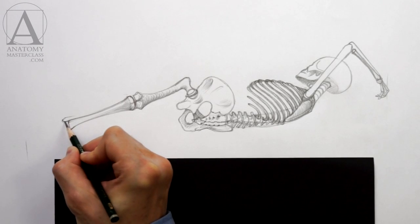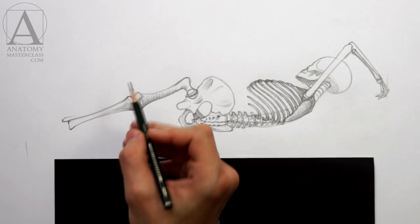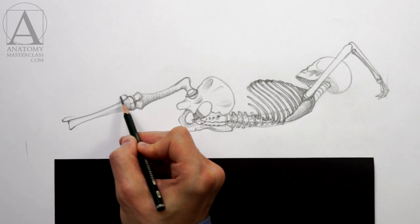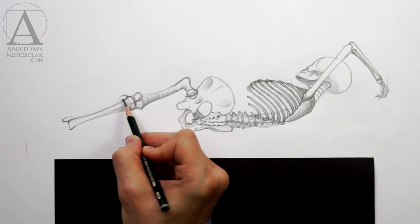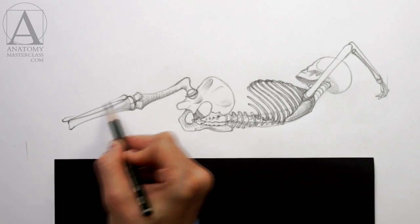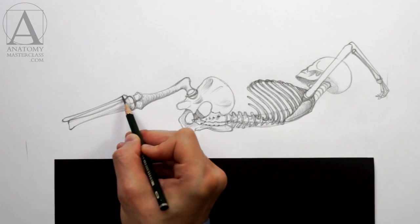Another bone of the lower leg is called the calf bone. At its bottom edge, it is positioned lower than the shin bone. This is why the outer ankle bone is lower than the inner one. At the top, the calf bone is connected to the shin bone. The shaft of the calf bone is slimmer than the shaft of the shin bone.